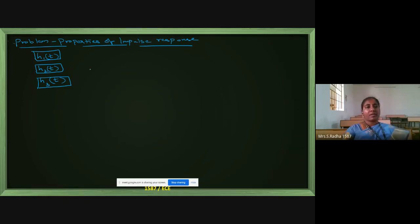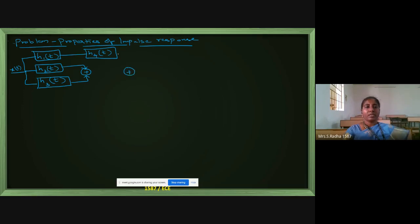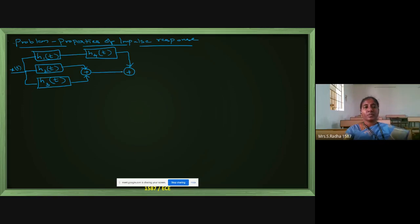I will add these two blocks. I am giving the same input X of T for all three blocks. After H1 I will put H4. And here is the final output addition again — I am going to add once more, and after this I am going to put H5. And here comes the final output Y of T.